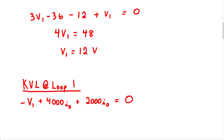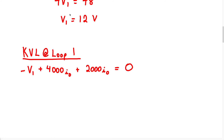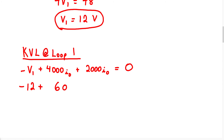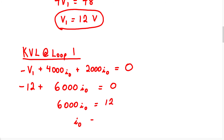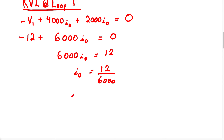All of that equals 0. We know the value of V1, so substituting: negative 12 plus 4,000 I0 plus 2,000 I0 gives us 6,000 I0, equals 0. Simplifying: 6,000 I0 equals 12. Therefore I0 equals 12 divided by 6,000, so I0 equals 2 milliamps.